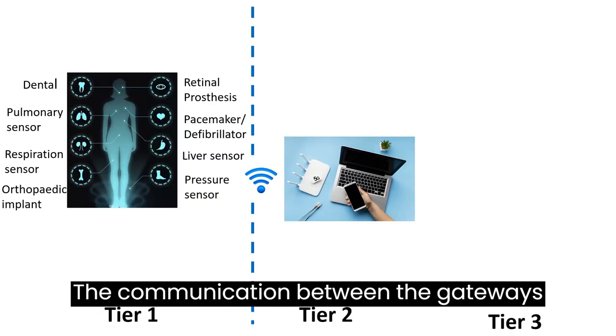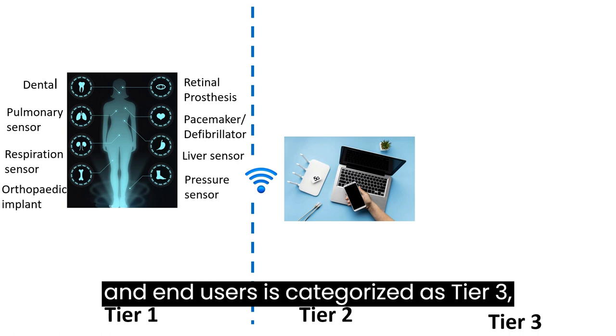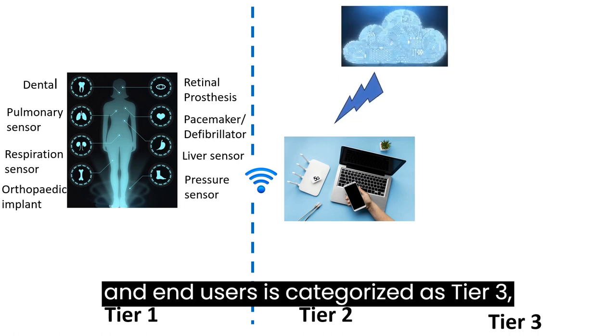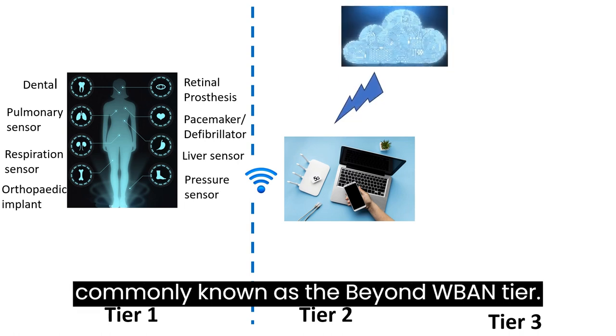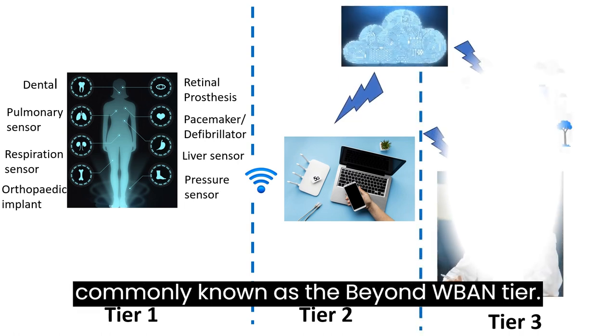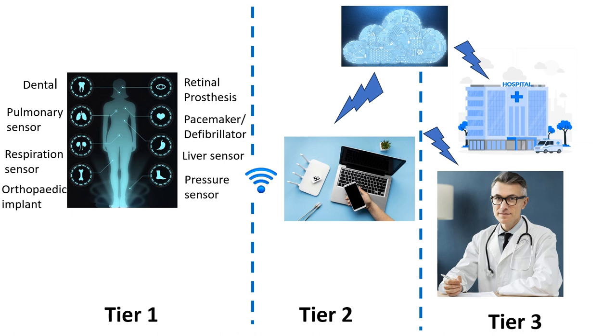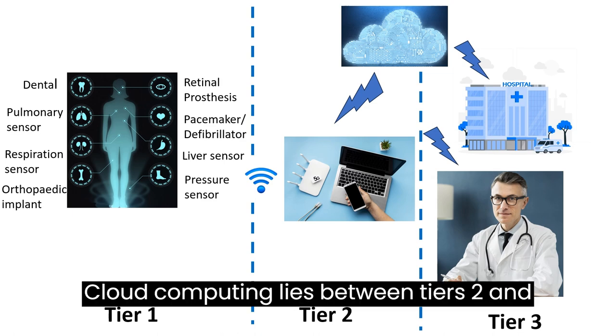The communication between the gateways and end-users is categorized as Tier 3, commonly known as the beyond W-BAN tier. Cloud computing lies between Tiers 2 and 3.